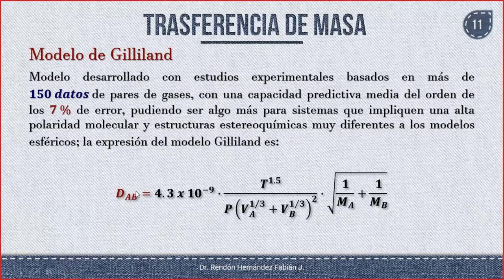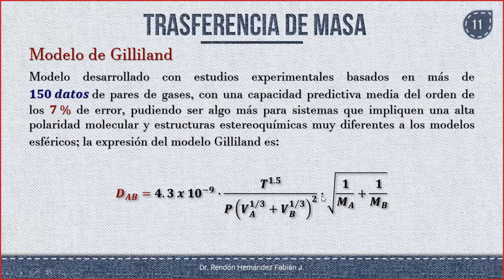La expresión del modelo de Gilliland es: la difusión de A hasta B es igual a 4.3×10⁻⁹ multiplicado por la temperatura a la 1.5, dividido entre la presión por (V_A^(1/3) + V_B^(1/3))², todo multiplicado por la raíz de (1/M_A + 1/M_B). No se te olvide que el denominador está elevado al cuadrado.